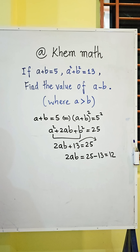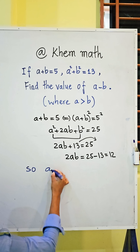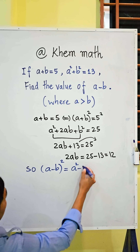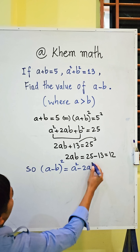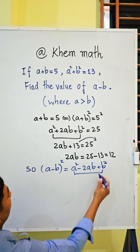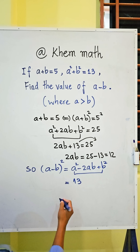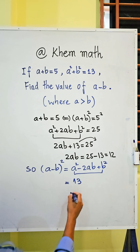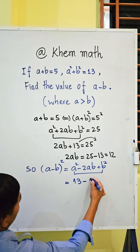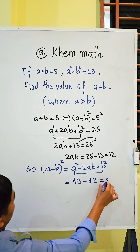Now, a minus b all squared equals a squared minus 2ab plus b squared. Here a squared plus b squared equals 13, and minus 2ab equals negative 12. So we get 13 minus 12 equal 1.